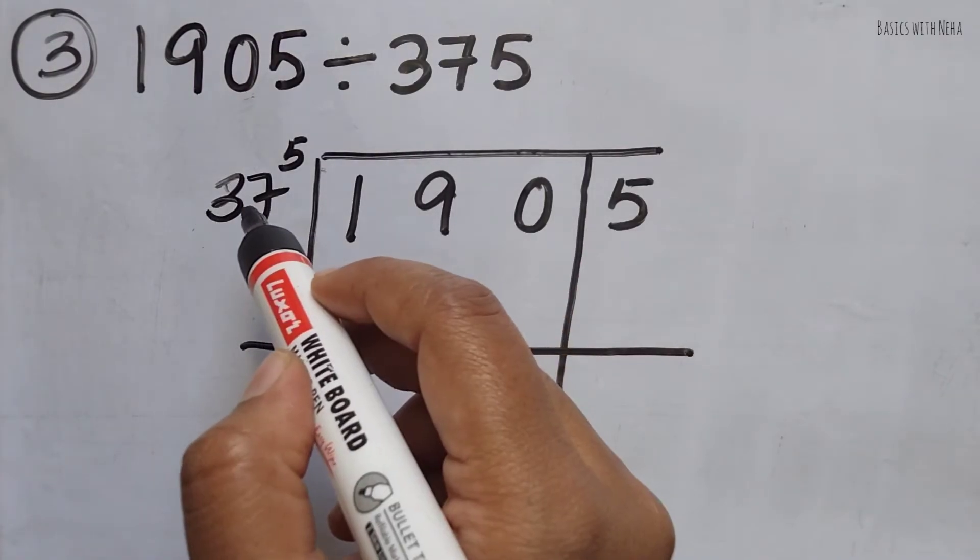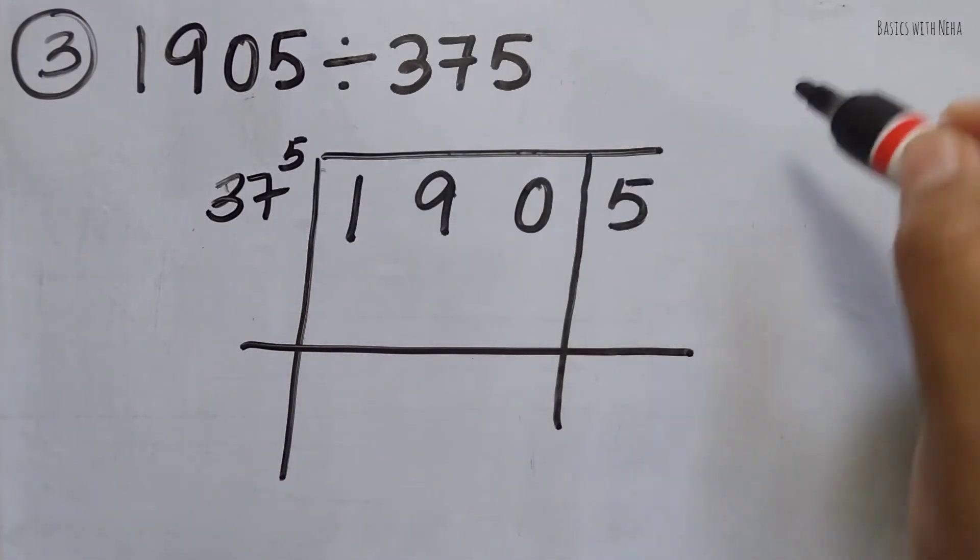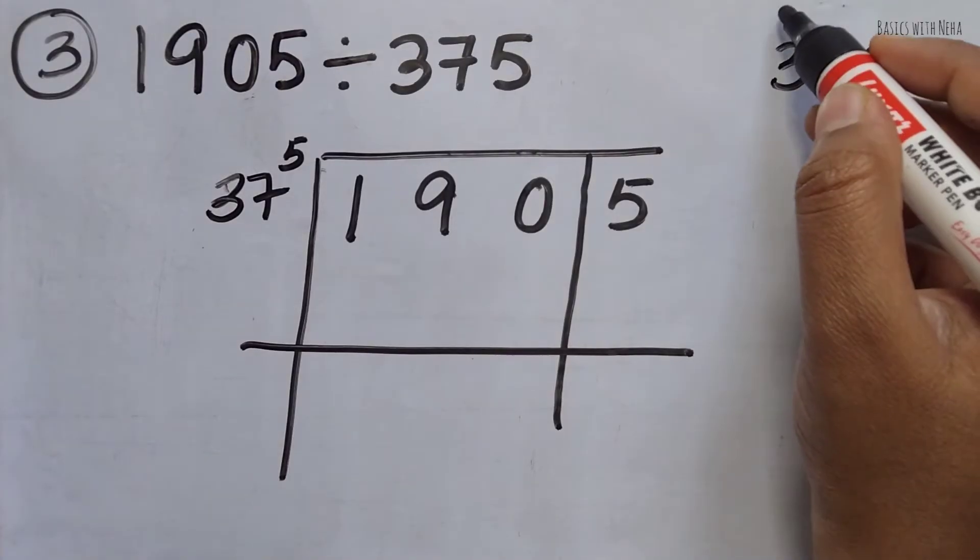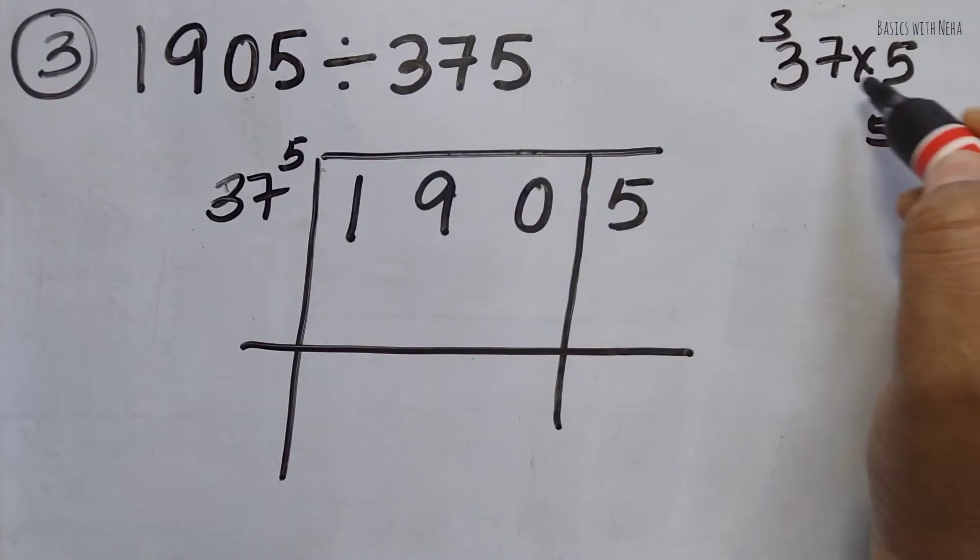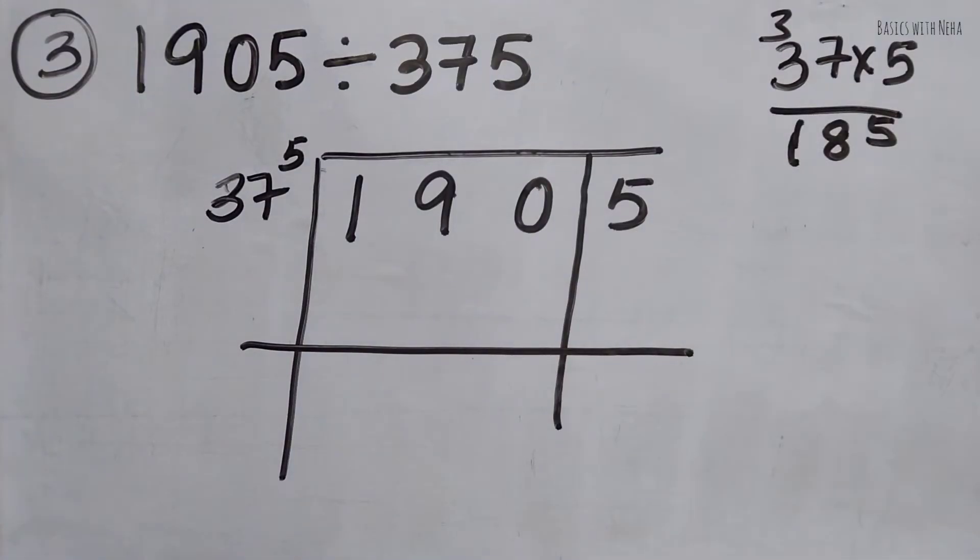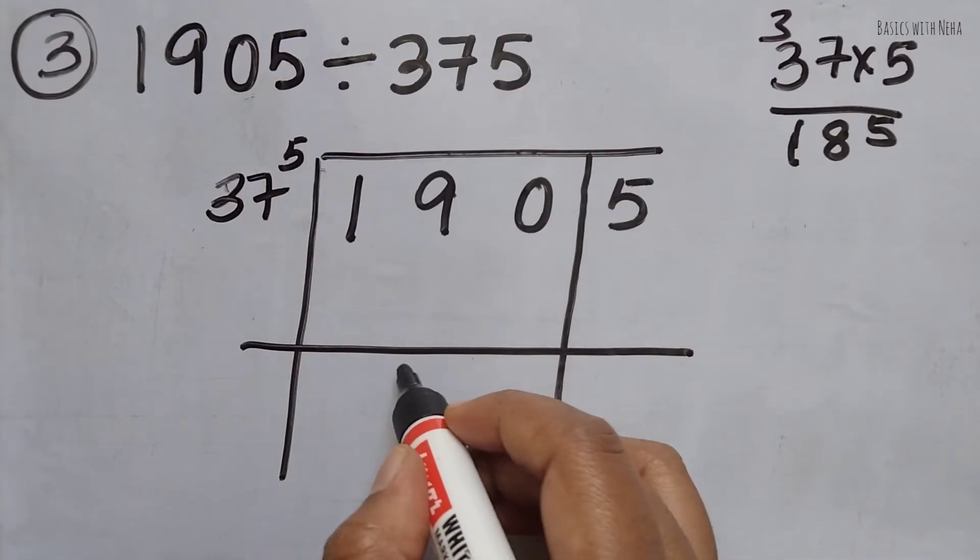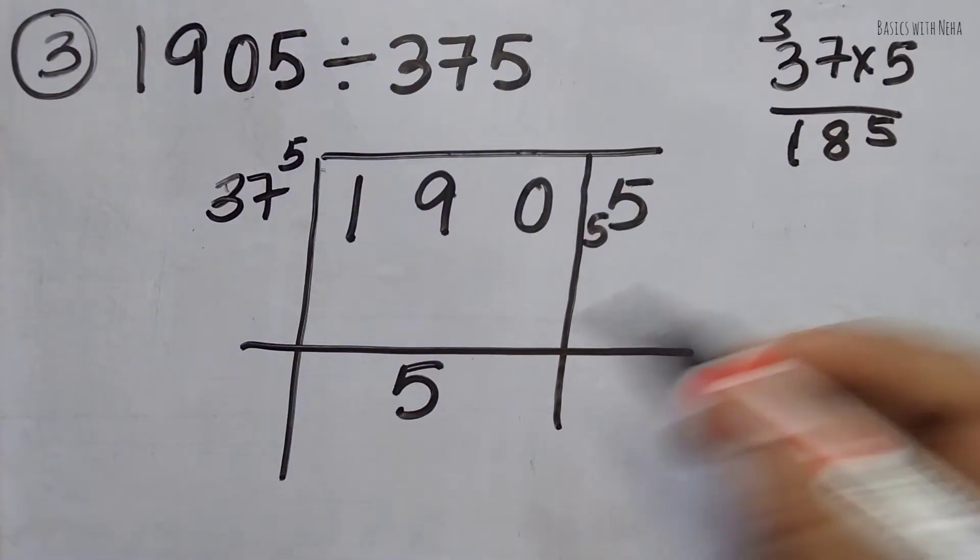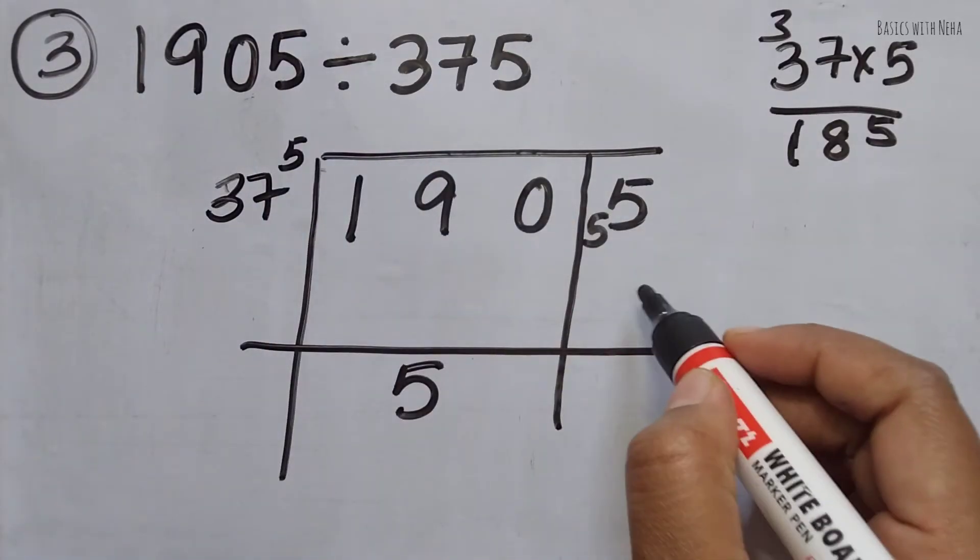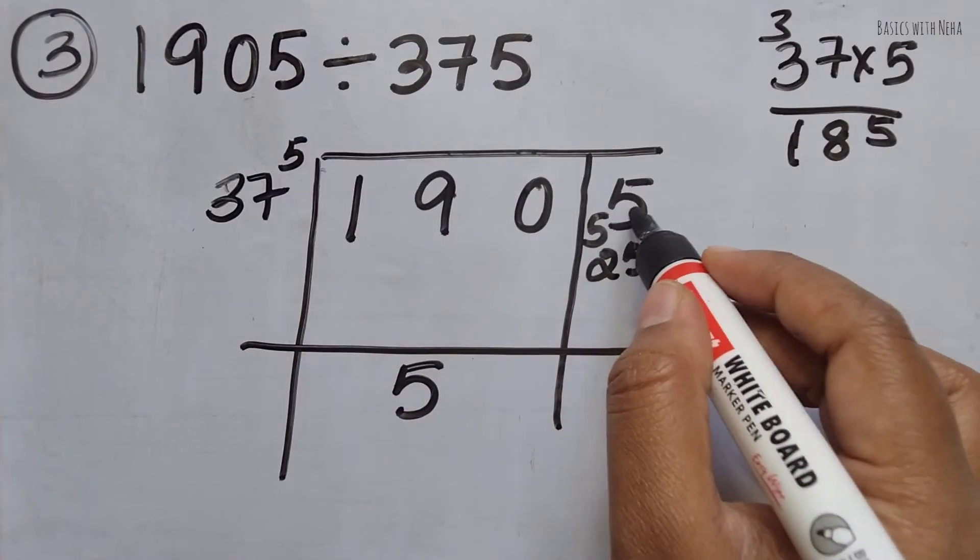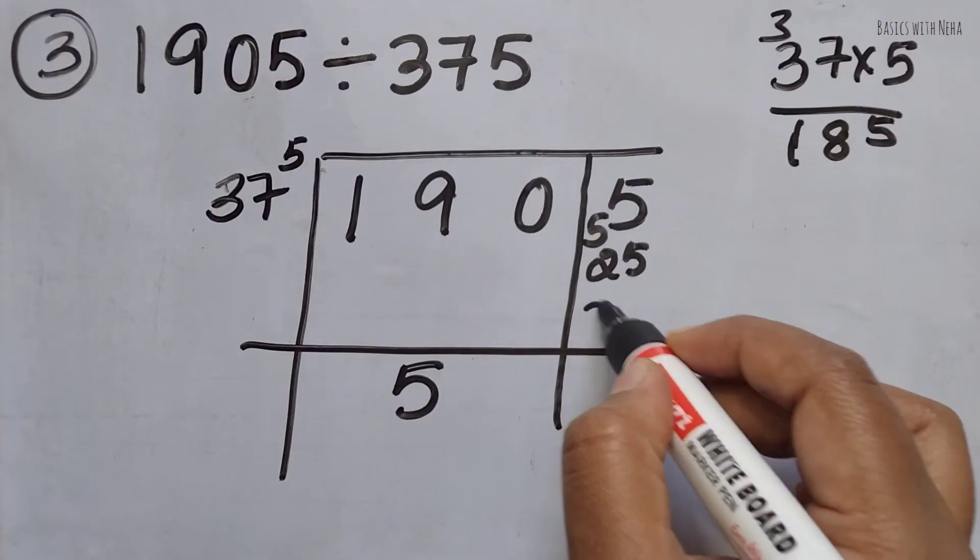Now, 37 times 5 will be 185. So I can take 5 times 185, so I'll be left with 5. I'm going to put this as the remainder 5. 5 times 5 is 25, I'm going to take 25 here. When I minus this, 55 minus 25 is 30.